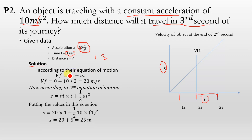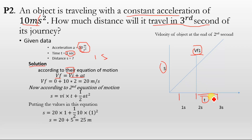According to the first equation of motion, vf equals vi plus at, where vf is the final velocity, vi is the initial velocity, a is the acceleration, and t is the time. We will first calculate the vf velocity at the end of the second second, because that is the end of the second second and the start of the third second. We will then consider this vf as the initial velocity for the second phase, using the equation s equals vi·t plus one-half a·t squared, putting this vf as vi at the beginning of the third second.